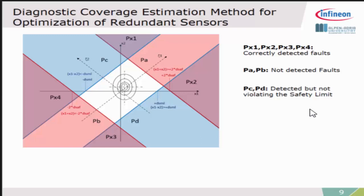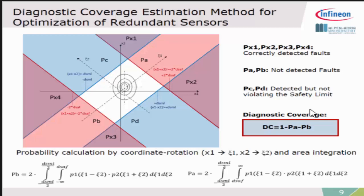To get diagnostic coverage, we are just taking the probability of PA and PB in that manner to calculate the diagnostic coverage figures. This is done by a coordinate rotation of the probabilities and integrating the area. In that case, it is the area PA and PB. I get real numbers where we can continue for further calculations.